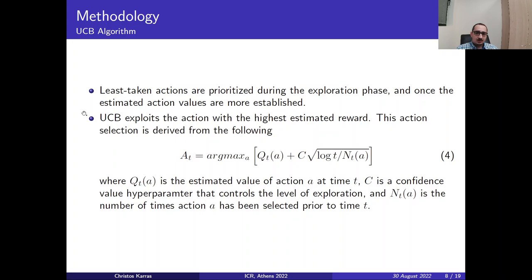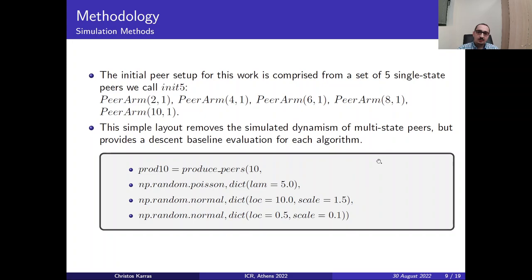And then we have the UCB algorithm, where least taken actions are prioritized during the exploration phase, and once the estimated action values are sufficient, the exploration phase follows up. UCB exploits the action with the highest estimated reward, and this action selection is derived from the following equation as shown in equation 4, where QTA is the estimated value of an action A at a time T. C is the confidence value hyperparameter that controls the level of exploration. And NTA is the number of times the action A has been selected prior to time T.